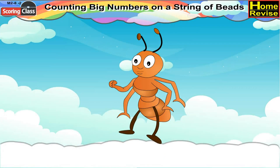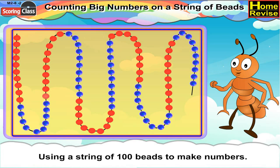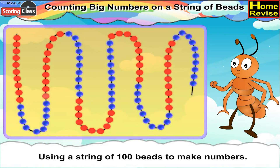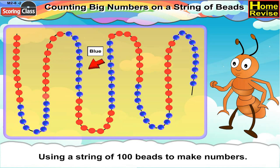Counting big numbers on a string of beads. Using a string of 100 beads to make numbers. Let us take an example. First, we will take a string of 100 beads, starting with 10 red beads, followed by 10 blue beads, then again 10 red beads, followed by 10 blue beads and so on till 100 beads.